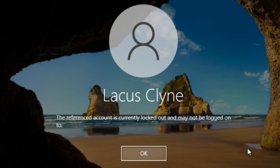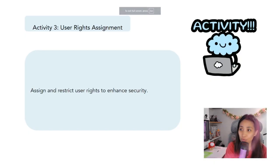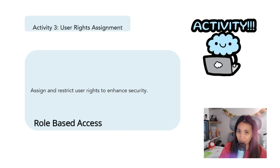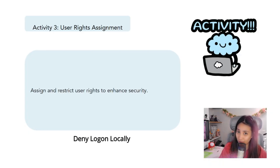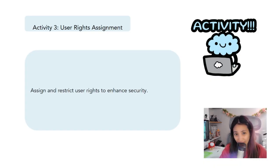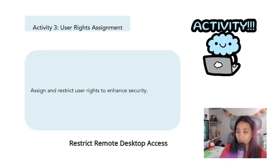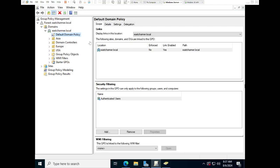Next is User Rights Assignment — assigning and restricting user rights to enhance security. This is more of a role-based access approach. We can deny standard users from logging in locally or directly to the servers, because we don't want them accidentally or intentionally accessing the servers. We can also restrict them from using Remote Desktop Services so standard users can't log into computers or servers remotely using RDS.